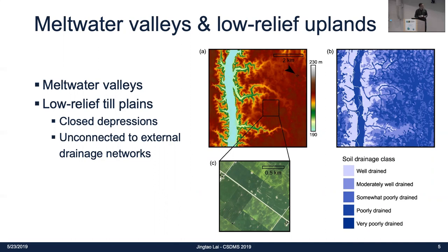This is the DEM of the Upper Sangamon River in Illinois — you can see the river valley here is about 30 meters deep. The figure on the right is the soil drainage data of the same area. Dark blue means the soil is poorly drained. A lot of places on the uplands are very poorly drained, and as a consequence, a lot of crops are dead because there's too much water.